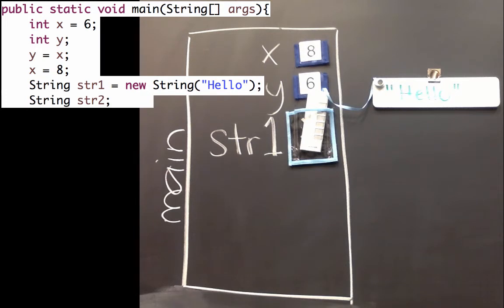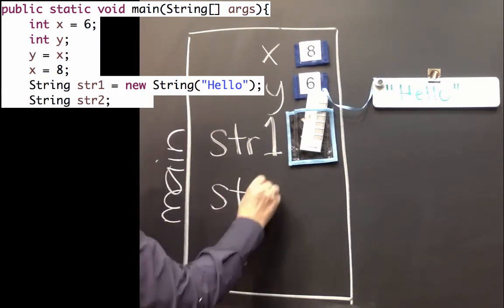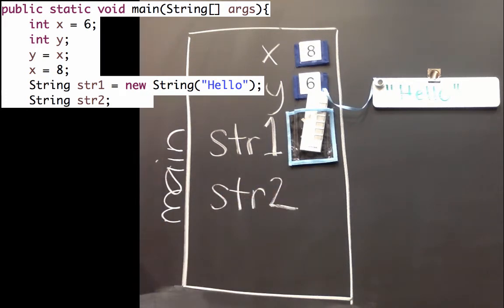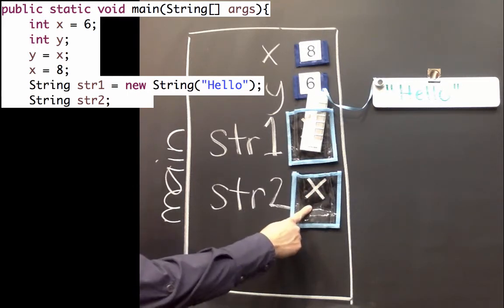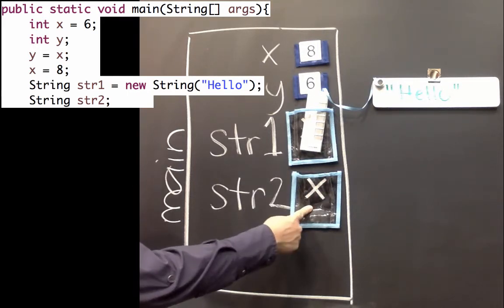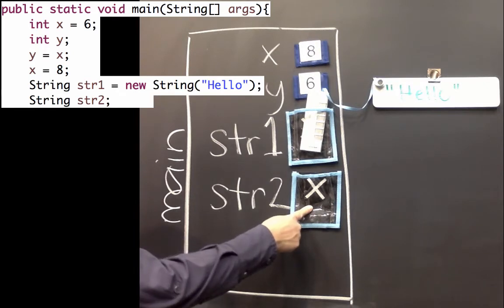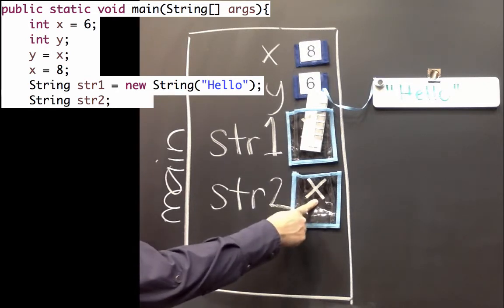If I make another string variable, str2, but I don't give it a value, then the variable will just not reference anything. So we can think about that as like a variable that could hold a remote control, but it doesn't have one. In Java, we'll call this null, and is often drawn as an x.